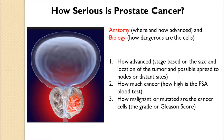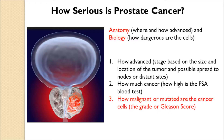How serious is prostate cancer? It depends on both anatomy and biology. Anatomy means how advanced is the cancer — the stage — based on the size, location of the tumor, and possible spread to nodes or distant sites. This is evidence you get from x-rays or scans. How much cancer is in the body? This is evidence from the PSA blood test. And finally, how malignant or mutated are the cancer cells — the grade or the Gleason score? This information comes from the pathology report, with the pathologist examining the cancer under a microscope.